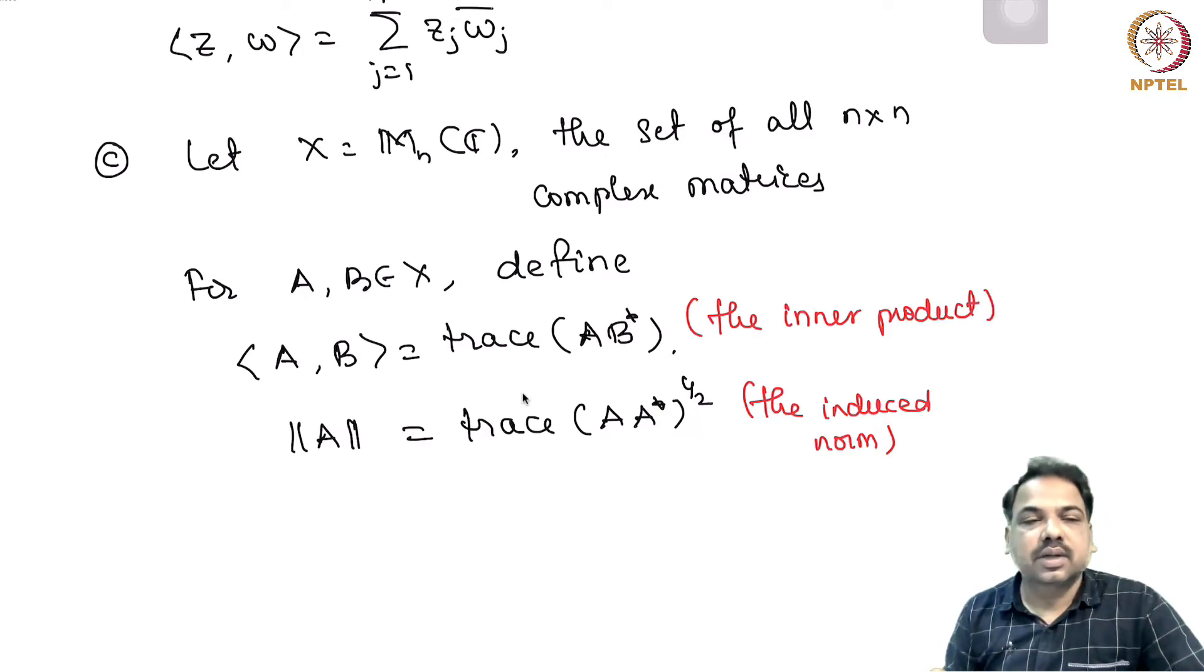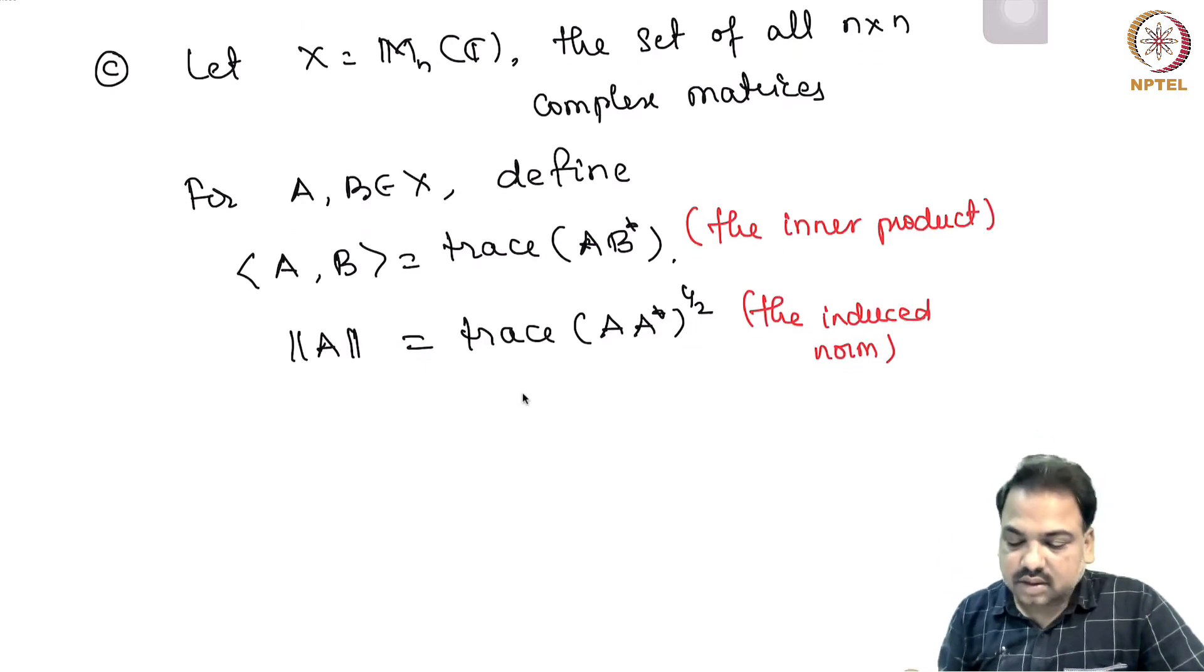With respect to this inner product, M_n(C), the set of n by n matrices, is a Hilbert space.